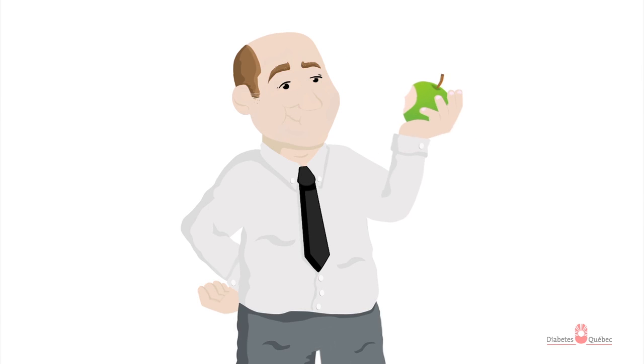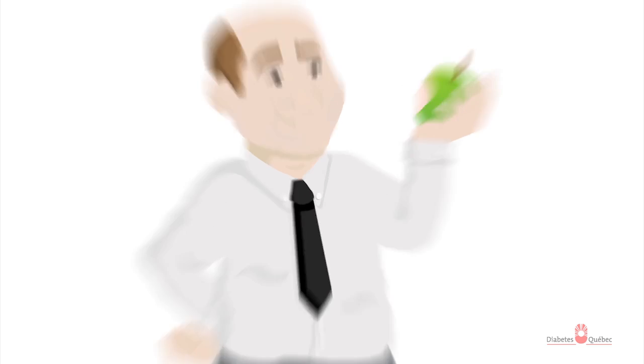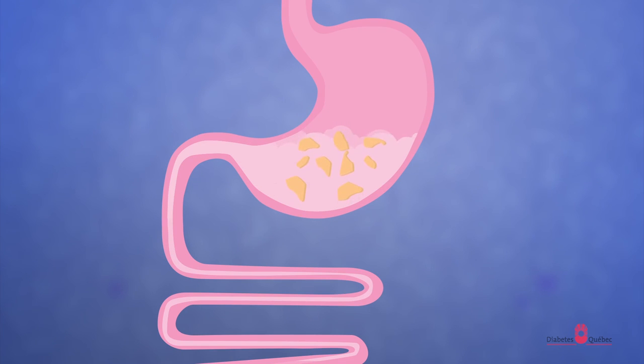To understand what diabetes is, let's begin with how the body uses the energy from food. Sugars, also called carbohydrates, come from the foods we eat.